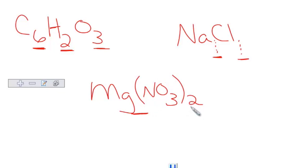The parentheses work just like in math. So that 2 is going to distribute in. Okay, so you have 2 nitrogens and 2 times 3, 6 oxygens.